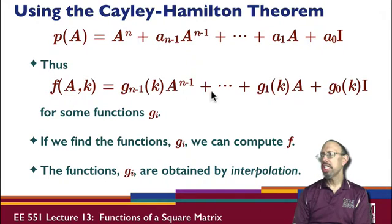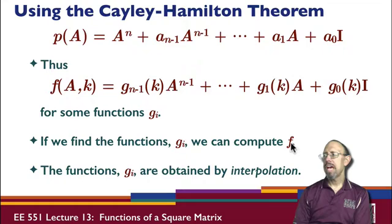The function is going to be a function of A up to the power n minus 1, and I'm going to have these functions g from g_0 up to g_(n-1), and these two things will be equal to one another. If we can find the functions g_i, then we have f evaluated at A.